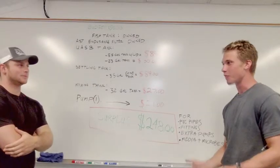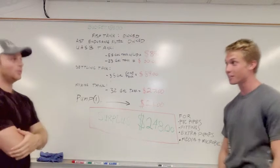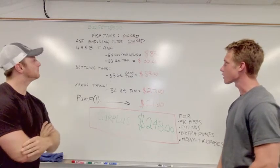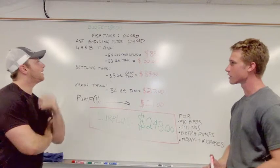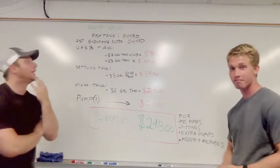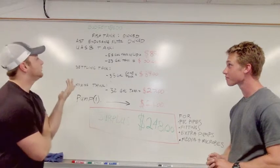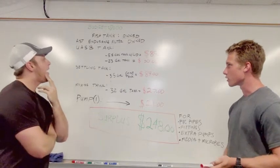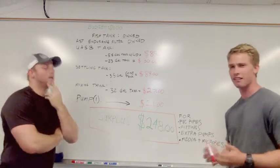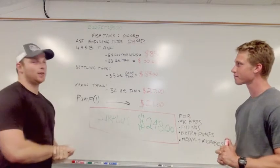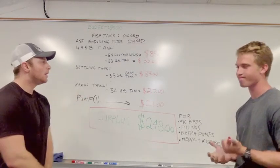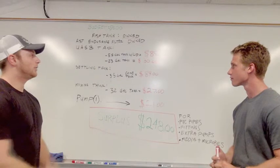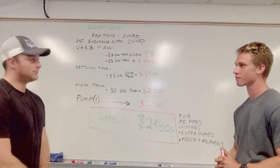To build this system, we have about $500 saved up. Luckily, we already have the fish tank with fish and the AST endurance filter, so we don't need to spend money on those. For the UASB tank, we need a 55-gallon tank with lid for about $85, plus a 23-gallon tank inside for our media and weir for $30.